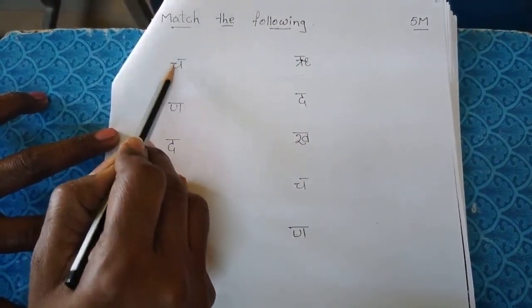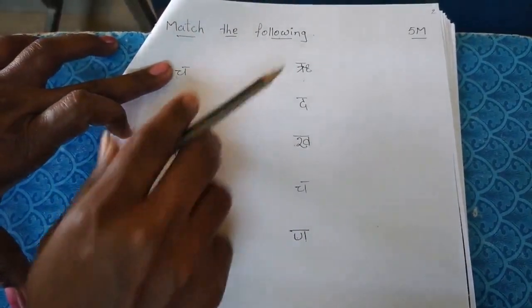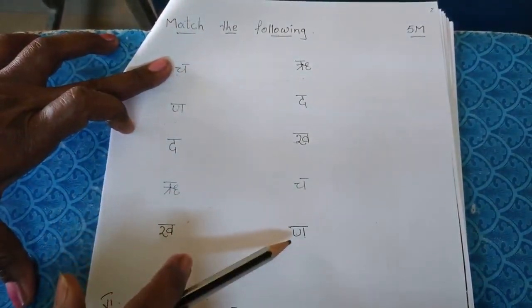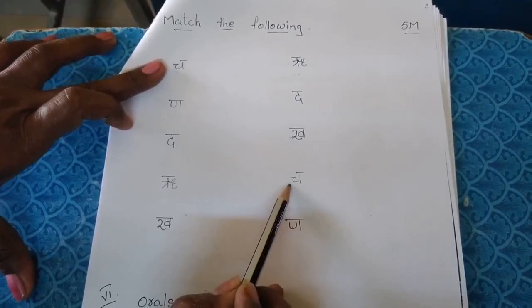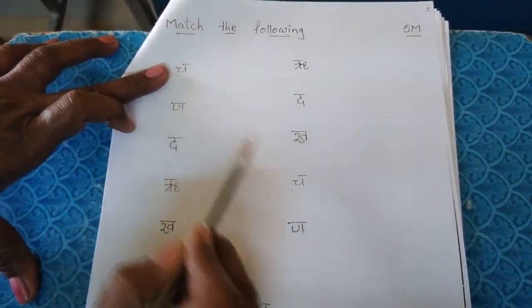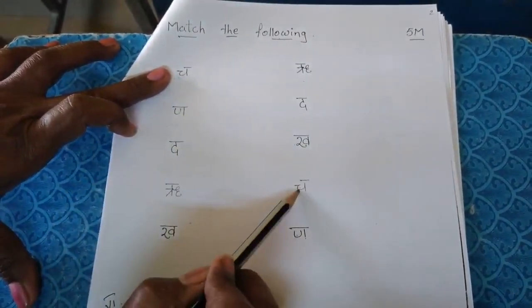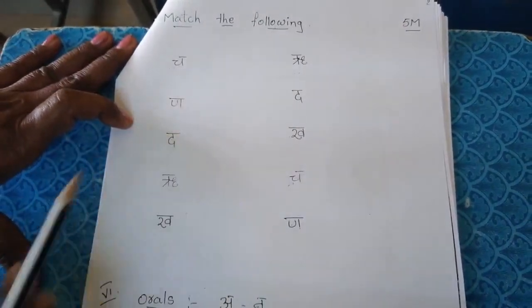Example look here. First letter is cha, you have to search where is the letter cha. Here, this is cha. So draw a line letter to letter. This is same letters matching.